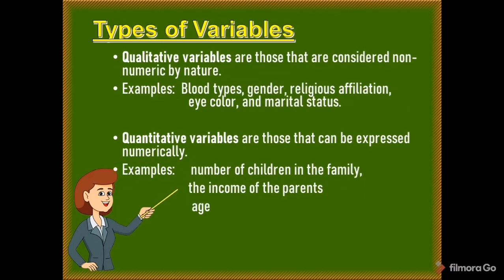Let's move on to the types of variables. The first is qualitative variables — variables that are non-numeric by nature. Examples include blood types, gender, religious affiliation, eye color, and marital status. The second type is quantitative variables — variables that can be expressed numerically. Examples include the number of children in the family, the income of the parents, and age.